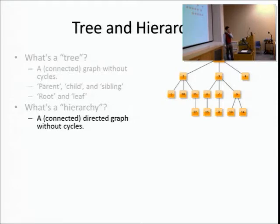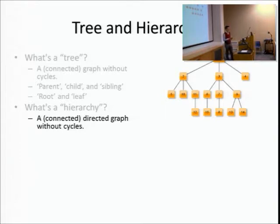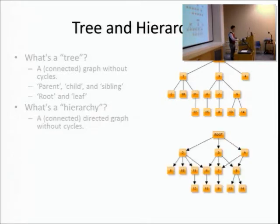A hierarchy is defined as a connected directed graph without cycles. The new thing here is directed graphs - graphs where edges have directions. In a social network like email, you have directions: who sent a message to whom. This is quite common in the real world.